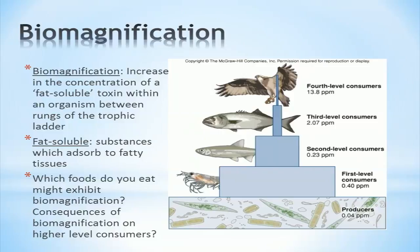Which foods do you eat that may have a high concentration of toxins? Can you think of any consequences of biomagnification on higher level consumers? What about the effect this may have on humans? Pause the video here to discuss these questions as a class.